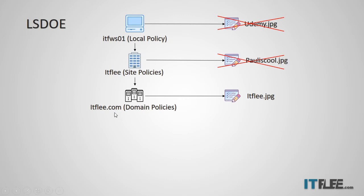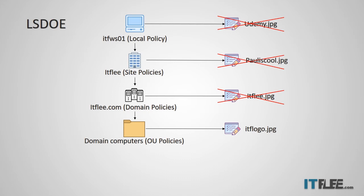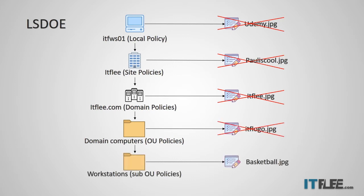To help you understand: your computer updates its group policy, applies Udemy.jpg from the local policy, then applies Pauliscool.jpg from the site policy, then applies ITFly.jpg from the domain policy — and that is the final setting in place. If we also had a GPO assigned to the OU Domain Computers configured with ITF logo as the background, it would take precedence over all the others because it's at the organizational unit level. And if we had a sub-OU called Workstations with a GPO configured for Basketball.jpg, it would take effect over all GPOs above it. So we go: local, site, domain, OU, sub-OU — and the sub-OU takes precedence.